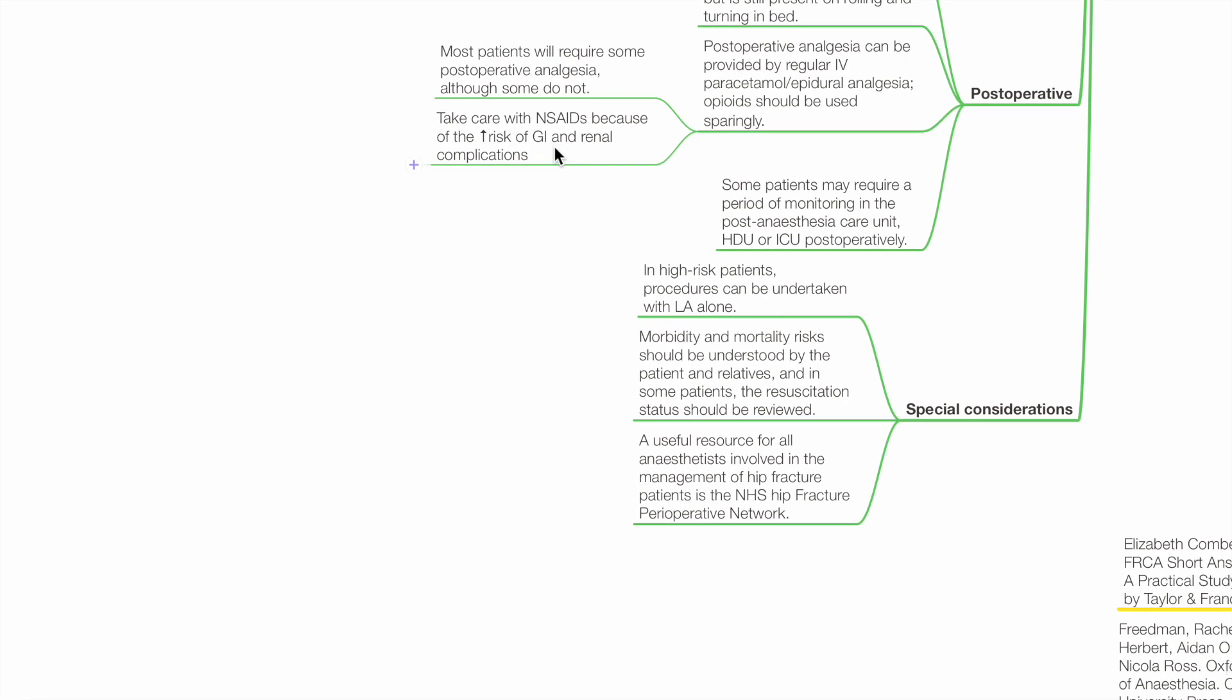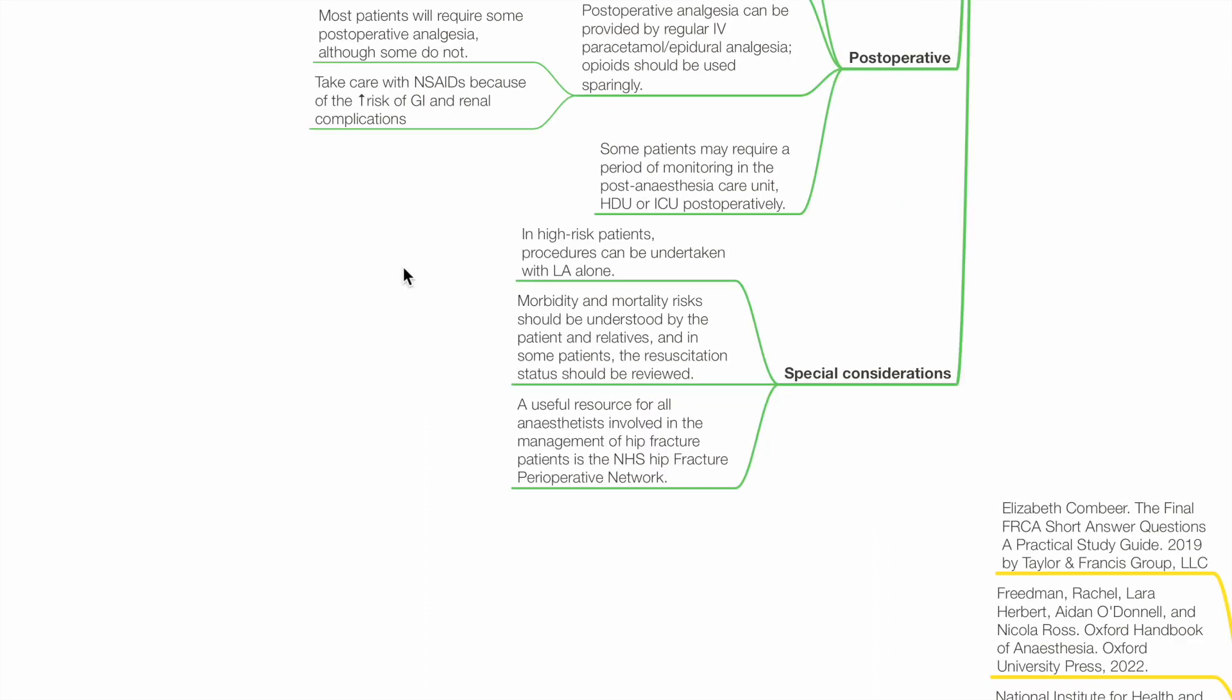Special considerations. In high-risk patients, procedures can be undertaken with local anesthesia alone. Mobility and mortality risk should be understood by the patients and relatives. In some patients, the resuscitation status should be reviewed. A useful resource for all anesthetists involved in the management of hip fracture patients is the NHS hip fracture perioperative network.